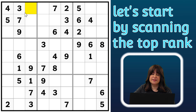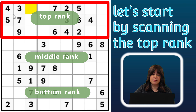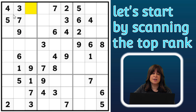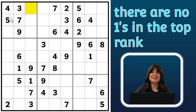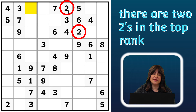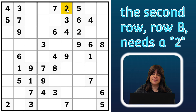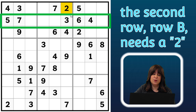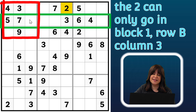Let's start by scanning the top rank — that's the top three rows — and we're looking for numbers that are repeated two times, starting with the number one. There are no ones in the top rank, so let's move on to the number two. There are two twos in the top rank, one in the top row and one in the third row, so the second row needs a two, and there's only one place it can go, so that's here.